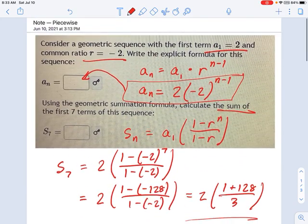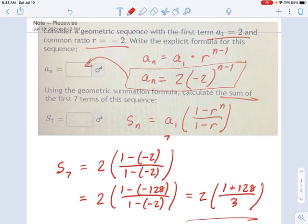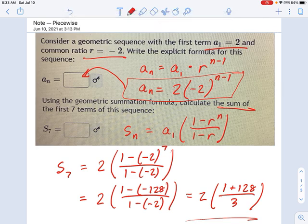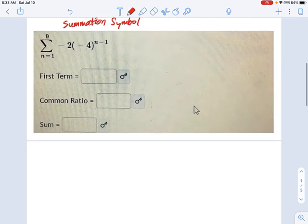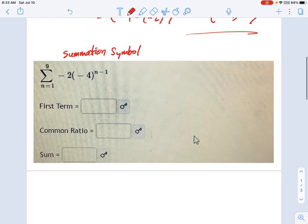So we're given some information here, but it's not all laid out for us very clear. Remember in this first one, it said the first term is 2, and here's the ratio. We were told very clearly what these things were. Right here, you're not told very clearly what they are, but all the information is present for you if you know where to find it. I want you guys to remember that whatever follows the summation symbol is your explicit formula.